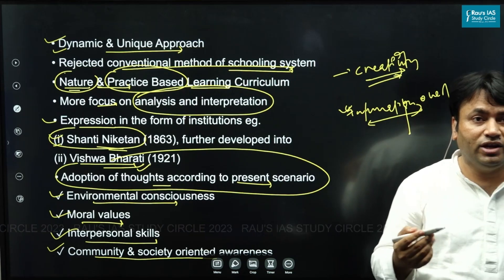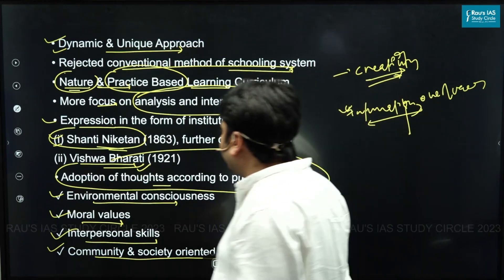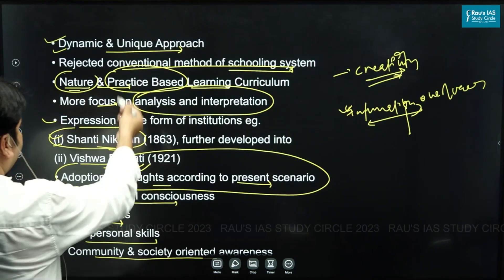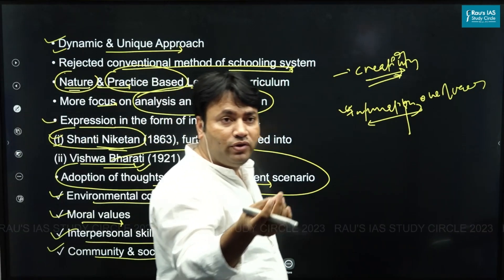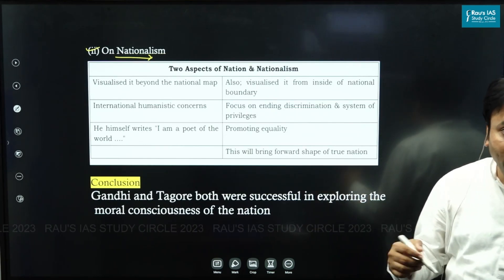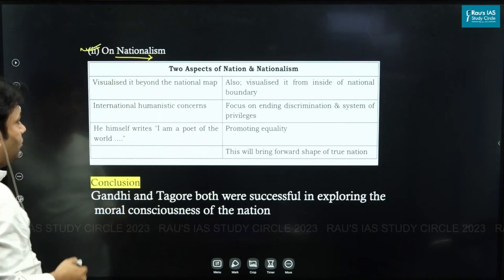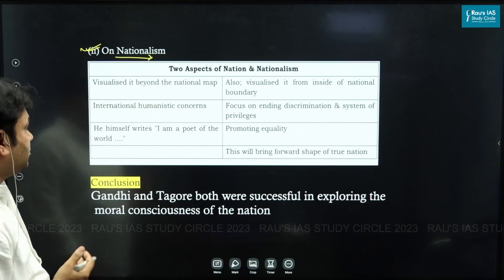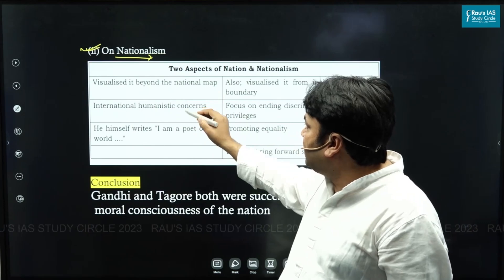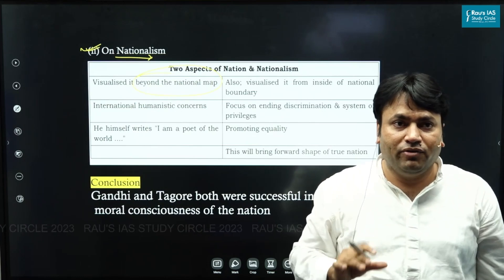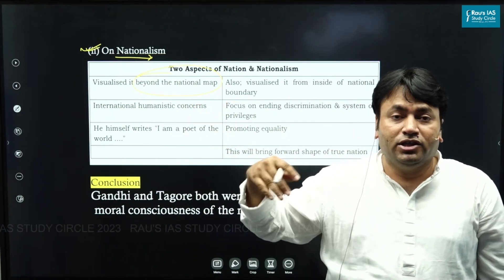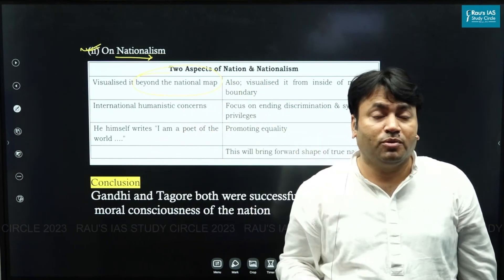Now for Tagore's ideas on nationalism — again, in the exam write keywords only, no scope to elaborate further. Tagore discussed two aspects of nationalism. The first was visualizing nationalism beyond the national map. For example, aggressive nationalism in European countries gave social validity to exploitative tendencies like colonialism and imperialism.